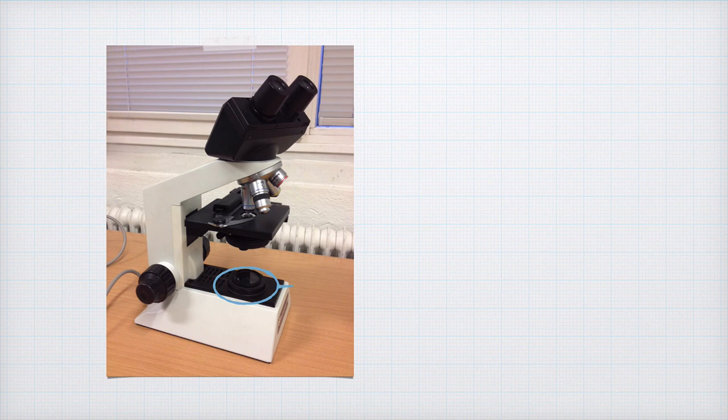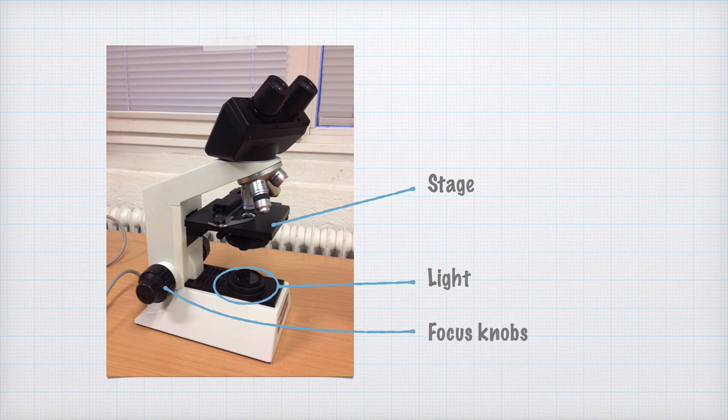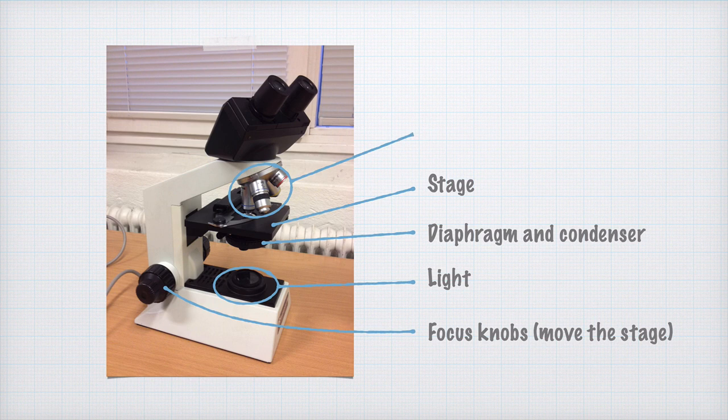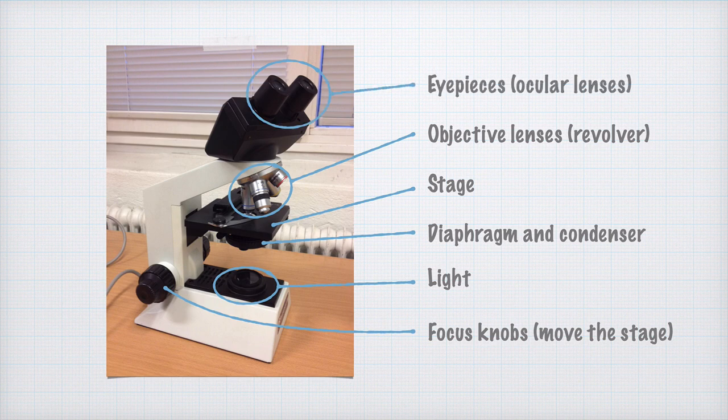This is almost the same way that modern light microscopes work. There's a light source down here, and you place the specimen here on the stage. The focus knobs are used to raise and lower the stage to get focus. The light passes through a diaphragm and condenser, which determine how much light is let through. The objective lenses are mounted on a revolver, letting you choose the magnification. The eyepiece or ocular lenses further magnify the image.